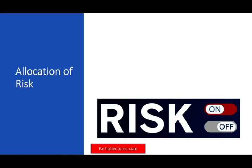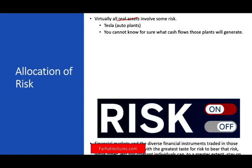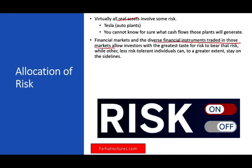Another role of the financial market is the allocation of risk. Every time you make an investment, you are taking a risk, and not all risks are equal. Whether you buy a vehicle for your business or invest in Tesla by giving them money to build auto plants, you are taking a risk — you cannot know for sure what cash flows those plans will generate. The financial market allows you to choose between different types of risks. Investors with the greatest appetite for risk can bear that risk, while less risk-tolerant individuals can stay on the sideline or take less risk.